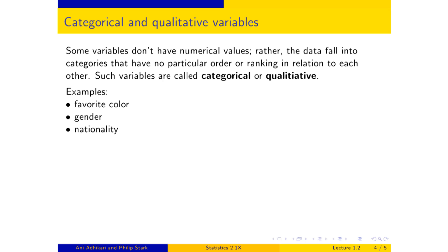For example, favorite color. You ask a group of people their favorite color, you're going to get answers like red, blue, green, and so on. There's no natural ordering to red, blue, and green. You can say green, blue, and red, and it's all the same thing. Gender, nationality are similar.